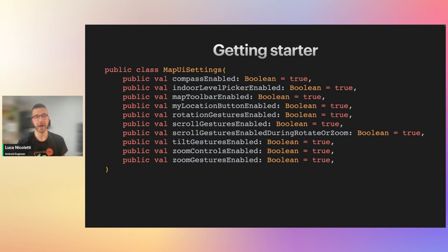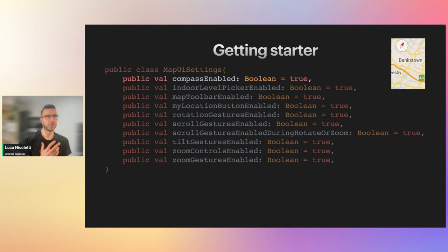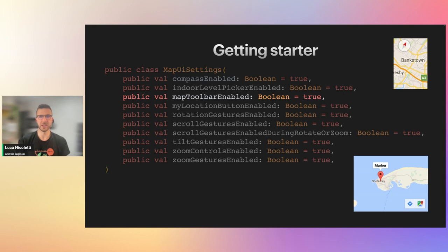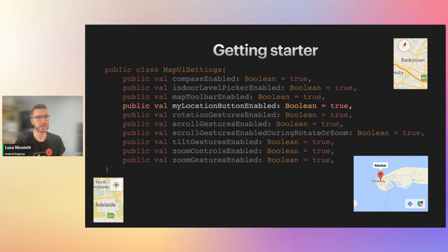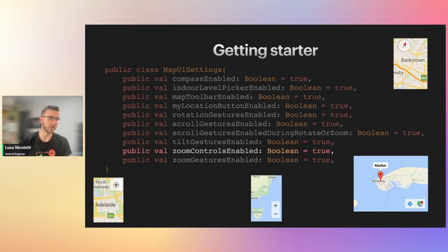The MapUiSettings let us customize and show or hide different controls on the map. The compass, when enabled, shows on the top-left corner only if the map is rotated — tapping it re-rotates the map with north pointing up. The map toolbar is shown only when a point of interest is selected, providing buttons to open Google Maps or navigate to that point. The my location button is placed on the top-right, and the zoom controls place plus and minus buttons at the bottom-right to zoom in or out.